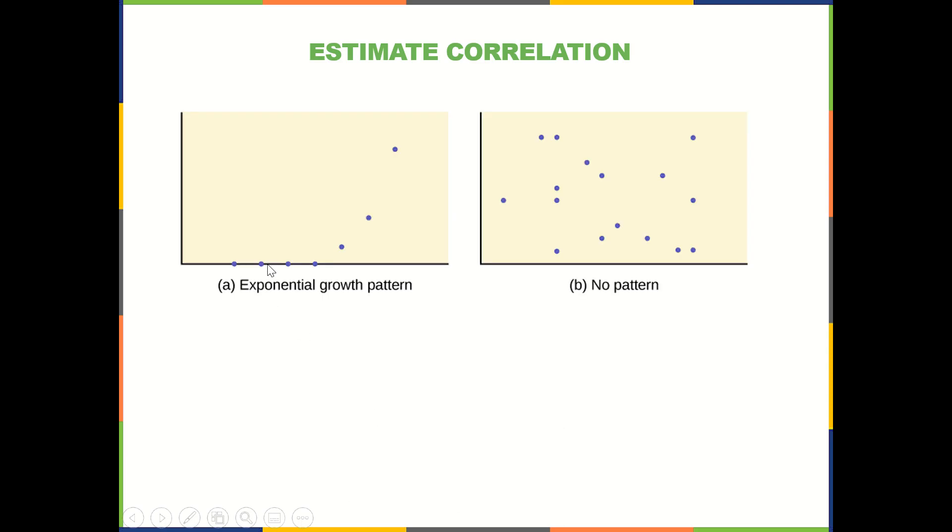Here we have an exponential pattern. So we might get a decent r value because this portion of this pattern at least is somewhat linear, or pretty tightly linear, but over here they're not.